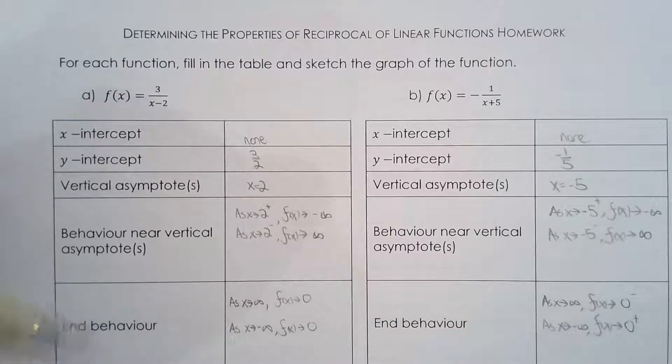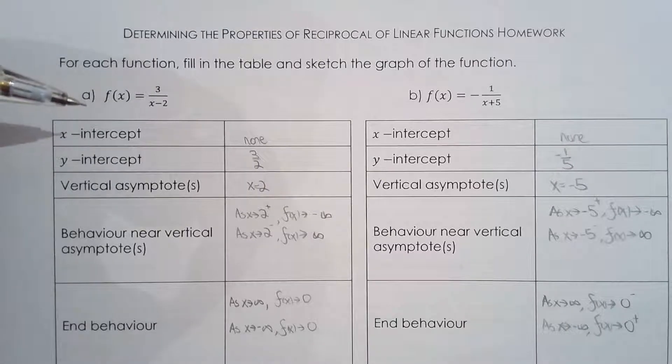And the horizontal asymptote is always y equals 0, because we're working with reciprocal linear functions. So that's very straightforward as well.